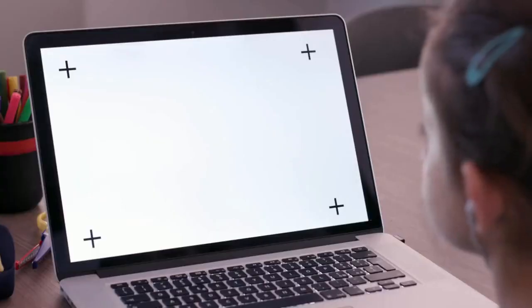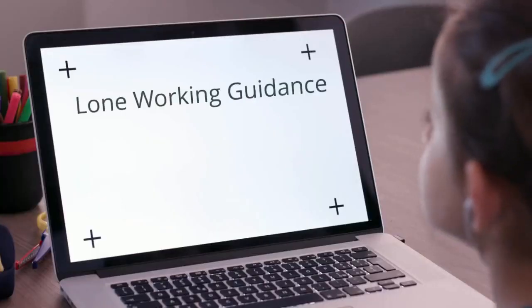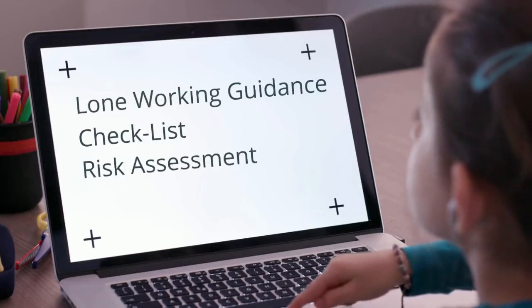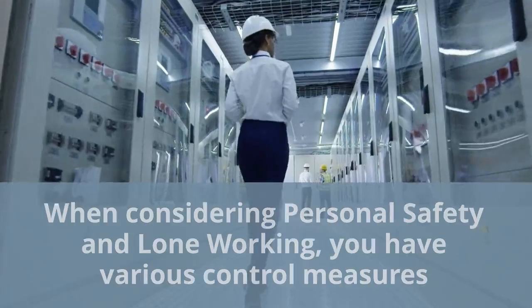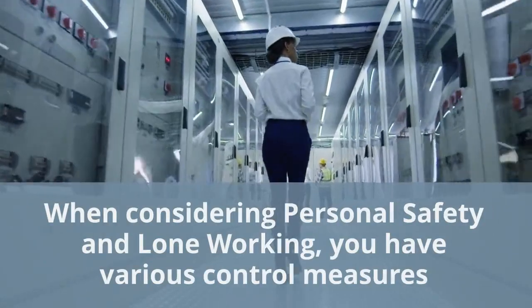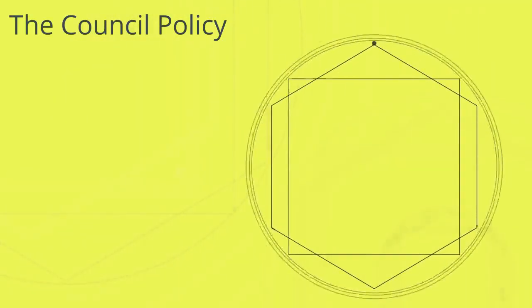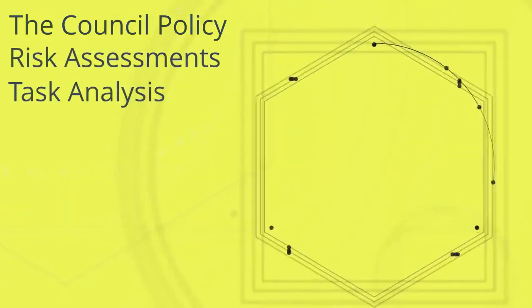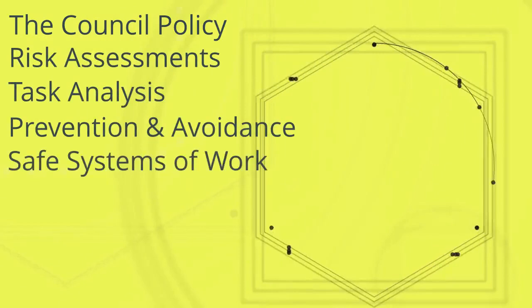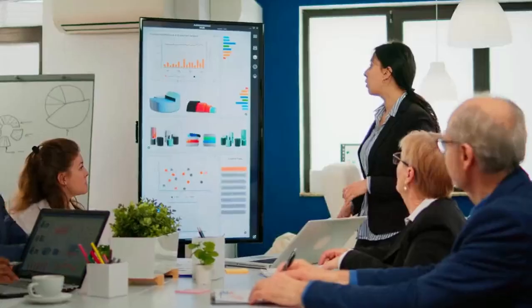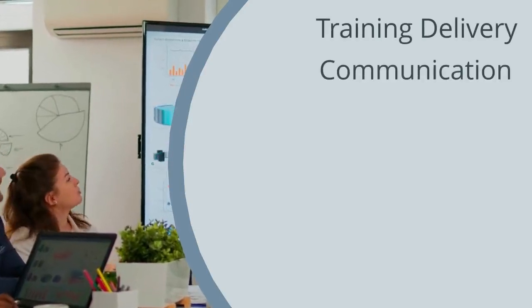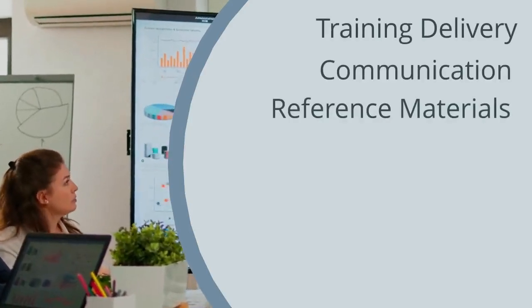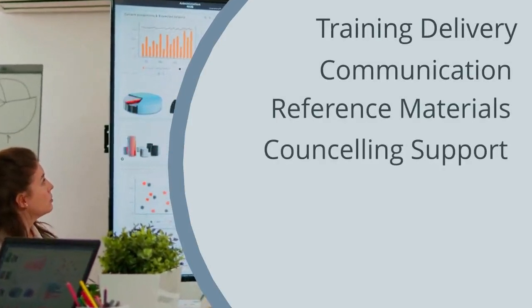The council has a lone working guidance, checklist and risk assessment available on the ORG. When considering personal safety and lone working, we have various control measures. These include, in no particular order: council policy and guidance, risk assessments, task analysis, prevention and avoidance arrangements, safe systems of work, training delivery, communication, reference materials, counselling support and performance reviews.